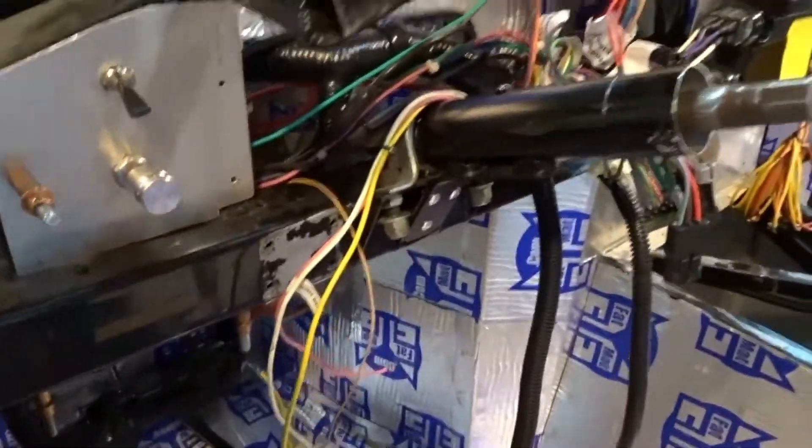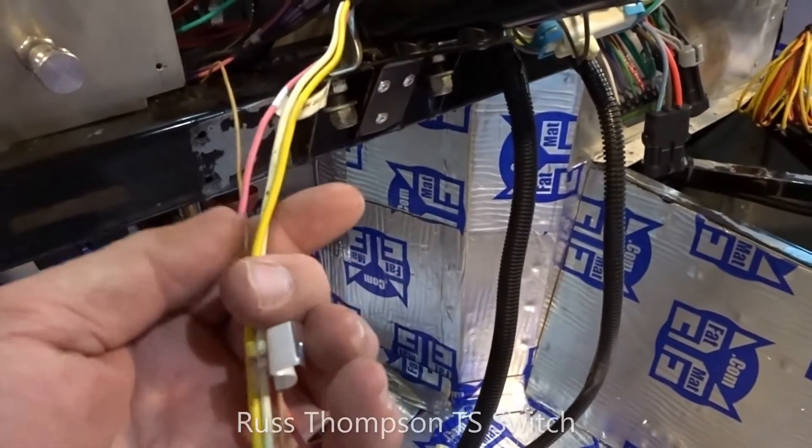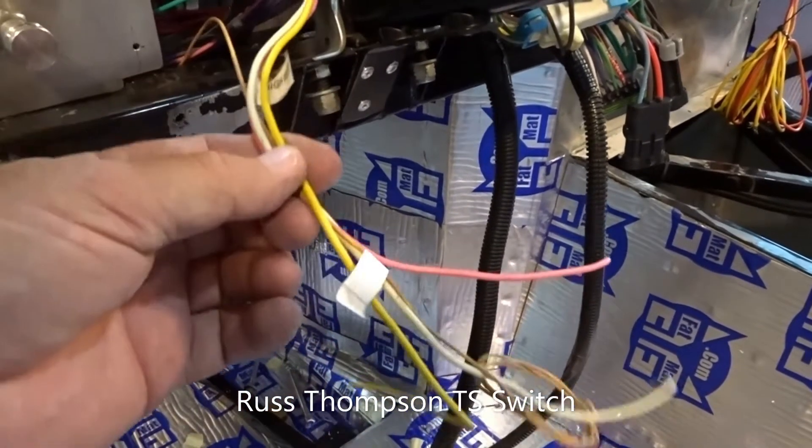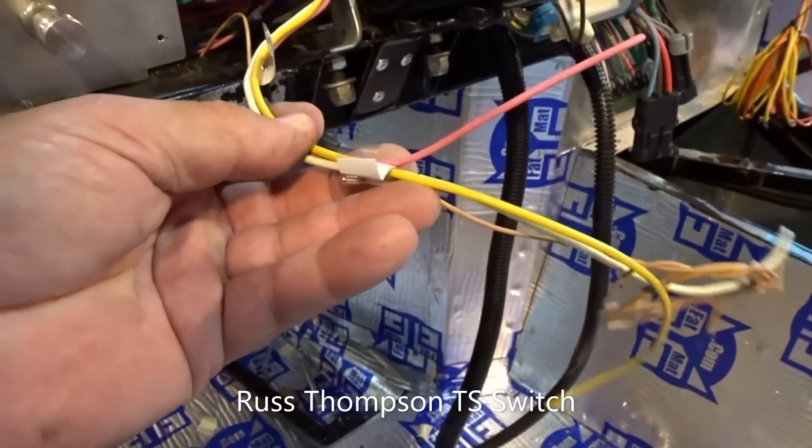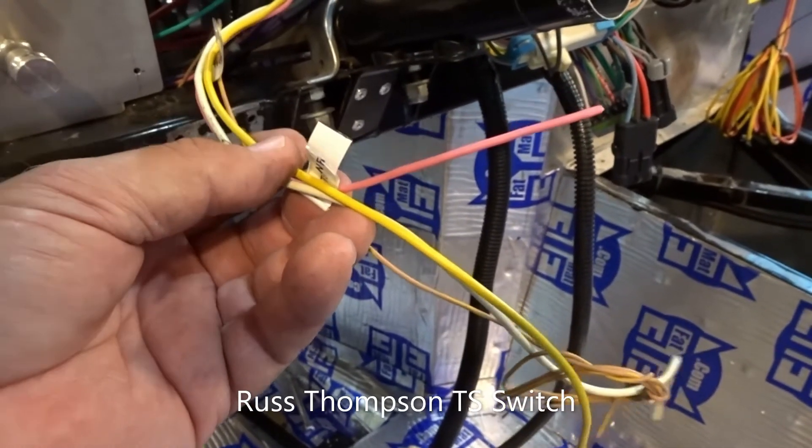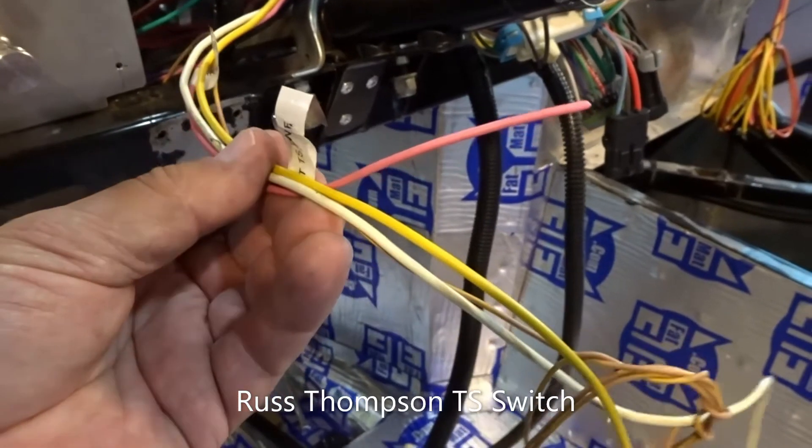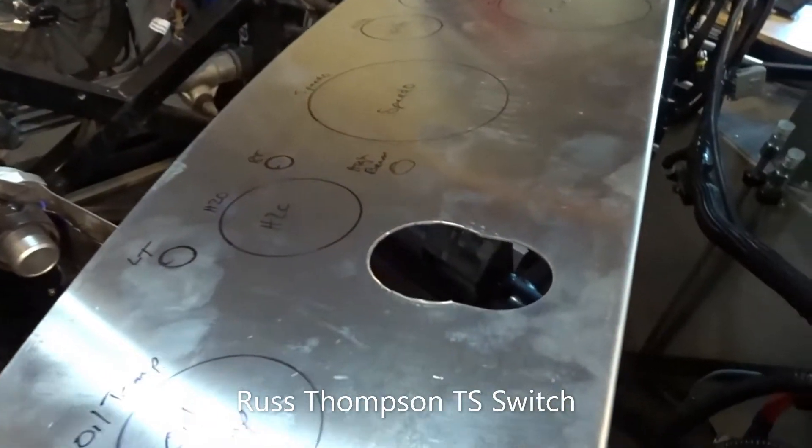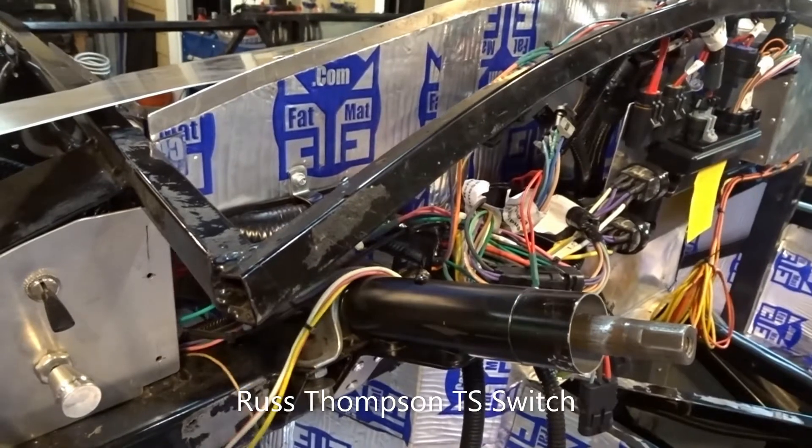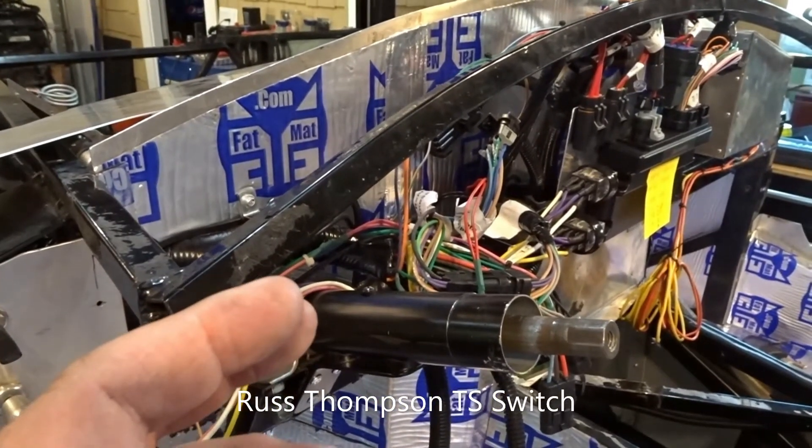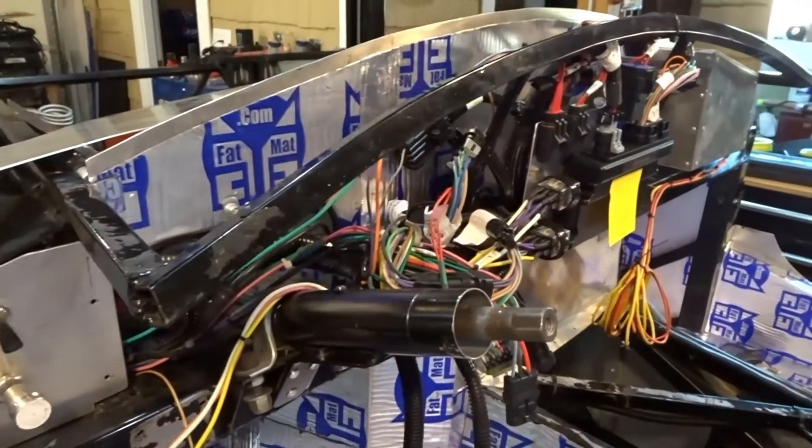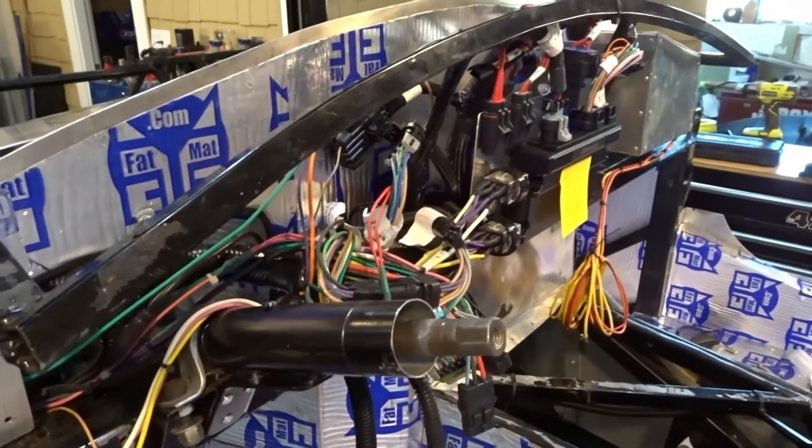These wires here are going to tie into the Ron Francis turn signal. We're going to go ahead and we're going to put some type of quick connectors on here. I may put weather packs on these. The problem with the weather packs is that they will not fit through some of the holes. But I did have to bore a pretty big hole in the dash for the Ron Francis steering shaft tube.